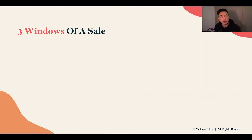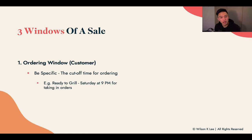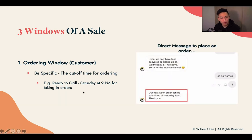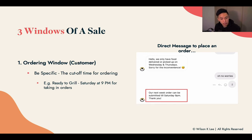So, three windows of sale. First up: the ordering window. Be super specific about what the cut-off time is for ordering. For example, using Ready to Grill as an example, the cut-off time for ordering is Saturday at 9pm for taking in orders for delivery the following week, because they need to make sure they have all the preparation done. So be specific with your ordering window.